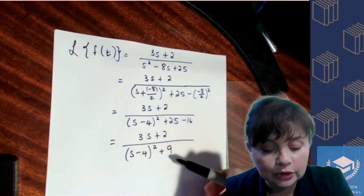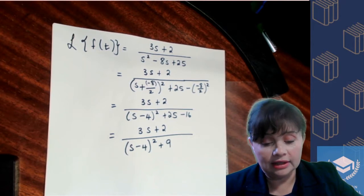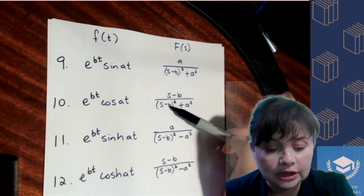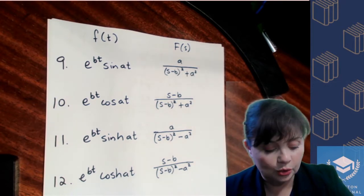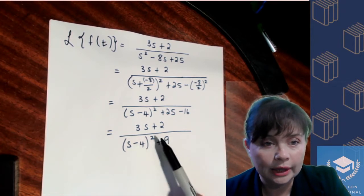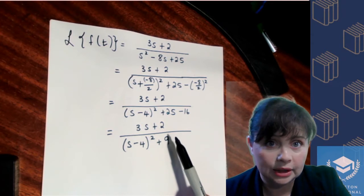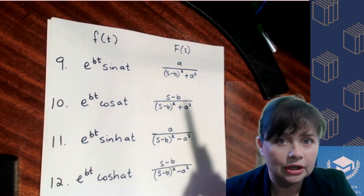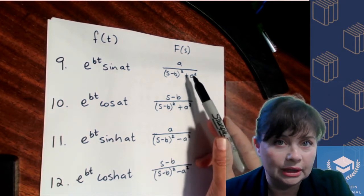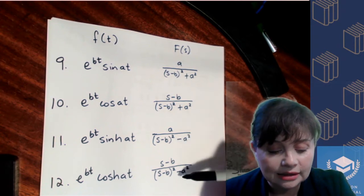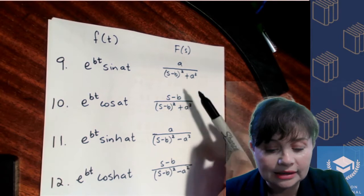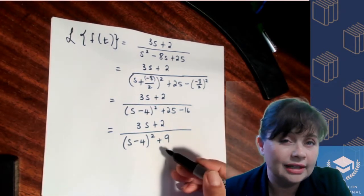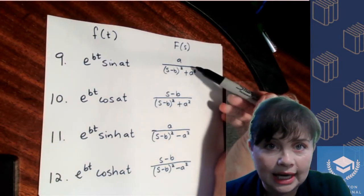Now looking at the denominator we've got, we have it in the same form as certain items on the table — you have two terms in the denominator and both terms can be written as squares: the first term is (s minus 4) all squared, and the second is 3 squared. The next important thing to note is the sign in between those two terms in the denominator. If you have a minus sign, you're looking at entries 11 or 12. If you've got a plus sign, you're looking at 9 or 10. We have a plus sign, so that narrows it down to number 9 or number 10.